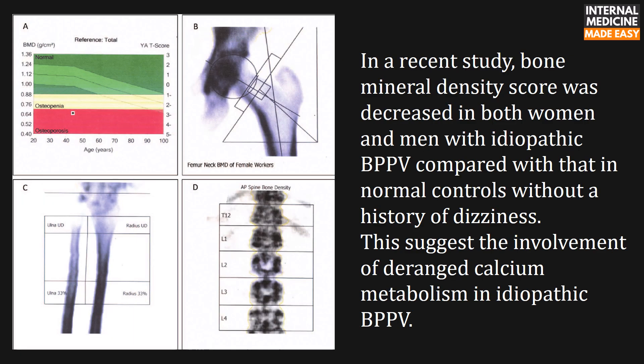In a recent study, bone mineral density score was decreased in both women and men with idiopathic benign paroxysmal positional vertigo compared with that in normal controls without a history of dizziness. This suggests the involvement of deranged calcium metabolism in this condition.